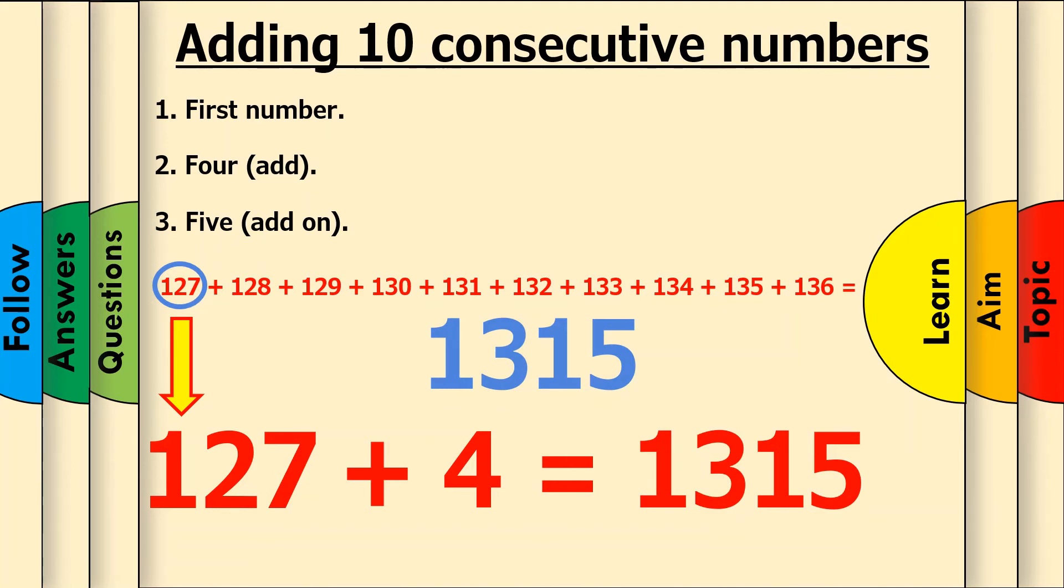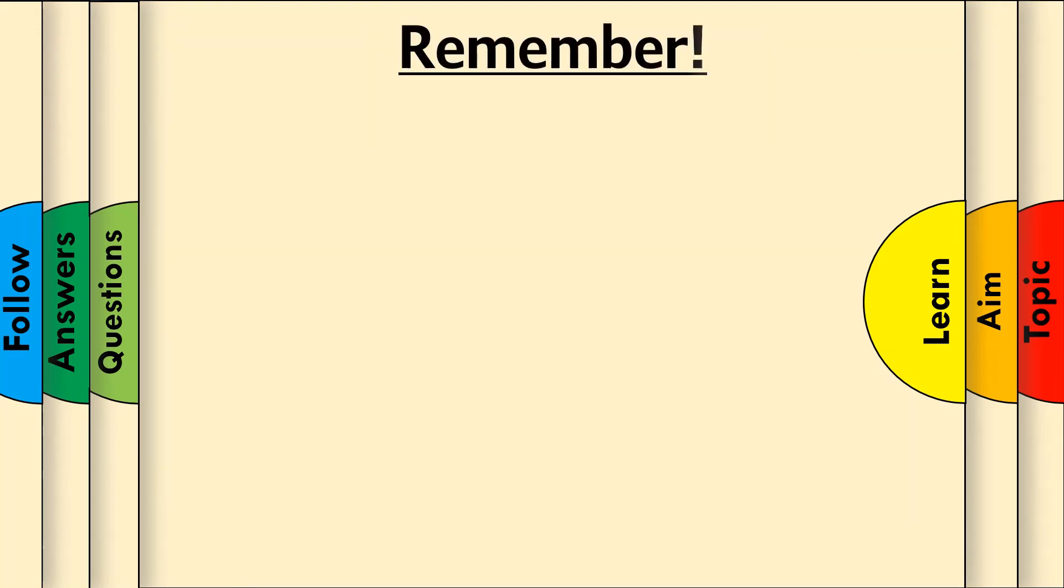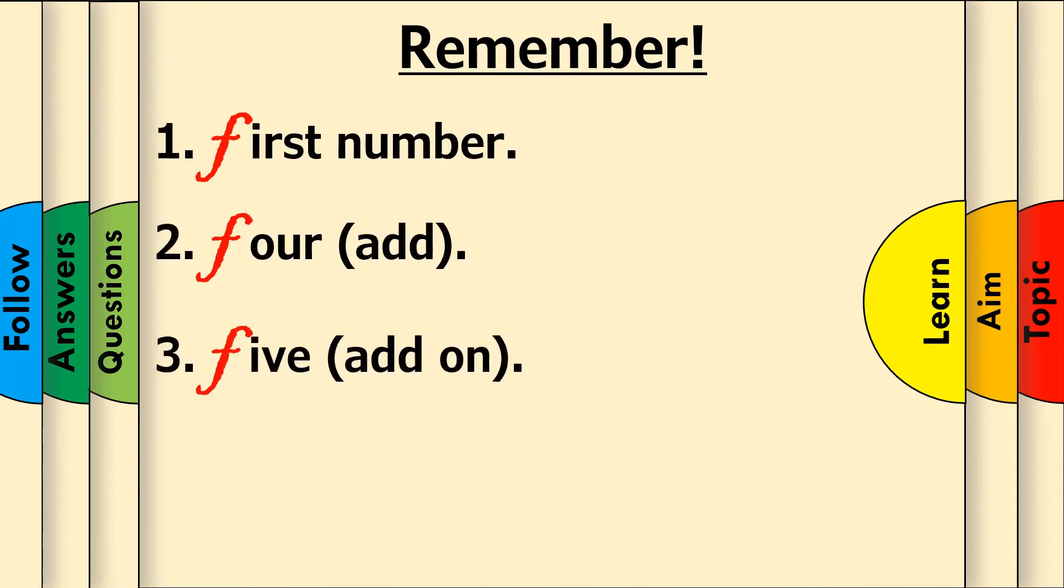We know that this trick works for adding together any 10 consecutive numbers, but how can we remember the steps of this awesome trick? Here are the steps of the trick that we've just taken a look at. Note that all the steps start with the letter F. If we combine these together, we get FFF, so we can call this the triple F trick. Simple.